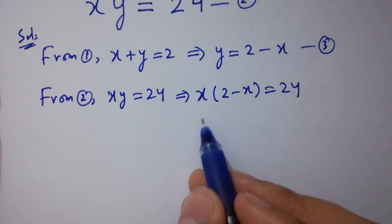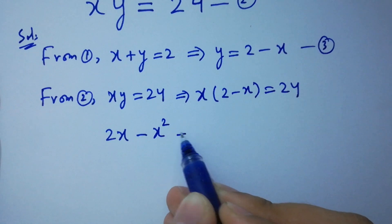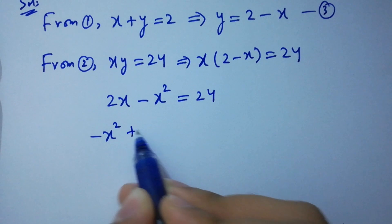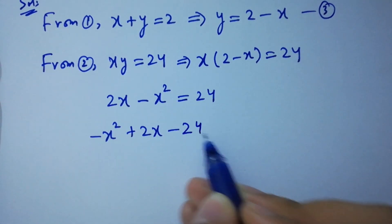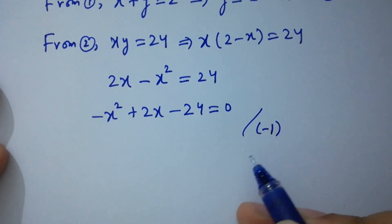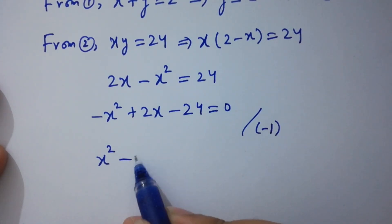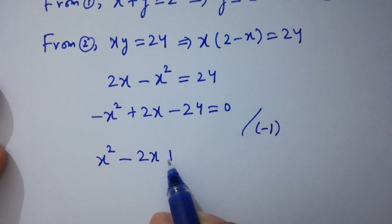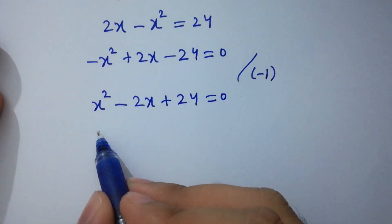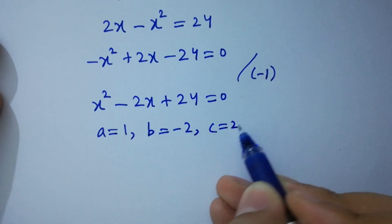Expanding gives 2x minus x squared equal to 24. Rearranging: minus x squared plus 2x minus 24 equal to 0. Dividing both sides by minus 1, we get x squared minus 2x plus 24 equal to 0. This is our quadratic equation where a equal to 1, b equal to minus 2, and c equal to 24.